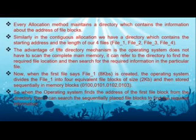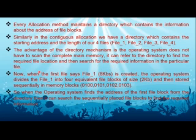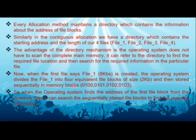Every allocation method maintains a directory that contains the information about the address of each file block. In this method, the directory contains the starting address and the length of each file — file one, file two, file three, and so on. The advantage is that the OS does not have to scan the complete main memory; it can refer to the directory to find the required file location. For example, if file one has a size of 8 KB, the OS divides it into four equal parts of 2 KB each, stored in memory blocks.